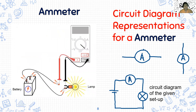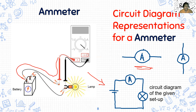As for the ammeter, it is a component that can measure the current through the wire. Notice that it is connected in series with the component that you are measuring the current. Its symbol is this. In this setup, it is represented with this diagram. From higher potential, current goes through the ammeter, then to the bulb, and then to the lower potential. If it is placed on the side, that is also acceptable.